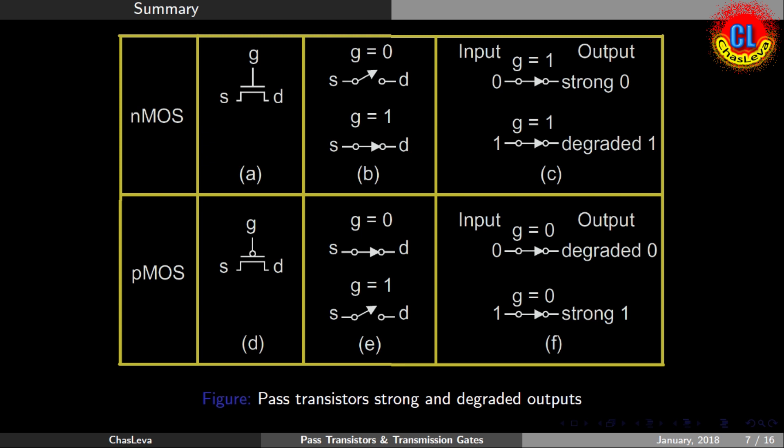Now the case of PMOS. If gate voltage is one, there won't be current flow between source and drain. If gate voltage is zero, the input at source will pass to drain. If source voltage is one, we will get proper strong one at drain. If source voltage is zero, we won't get proper zero. There will be some small voltage VTP.